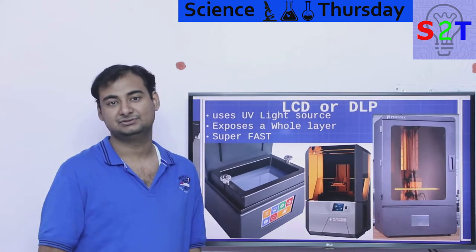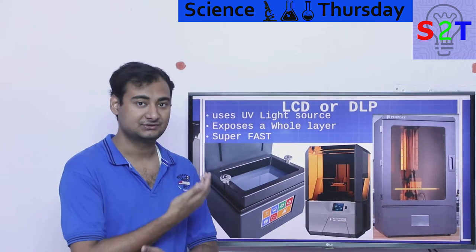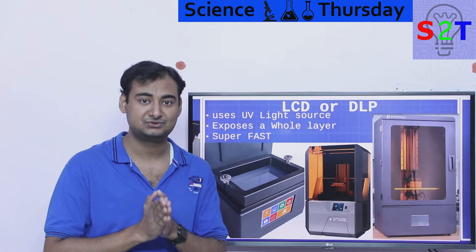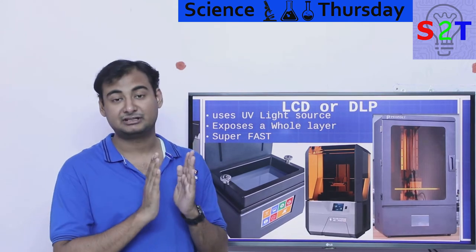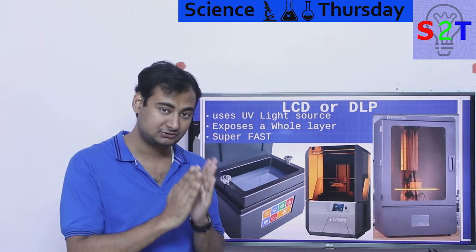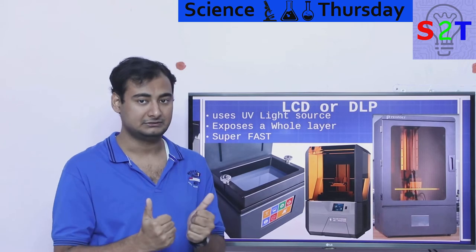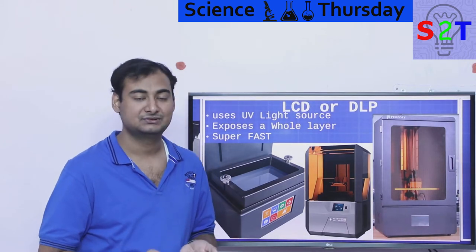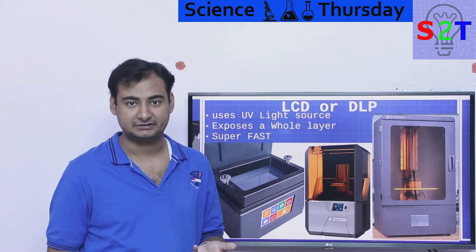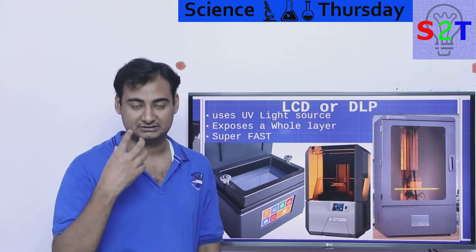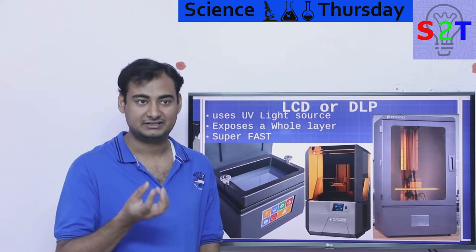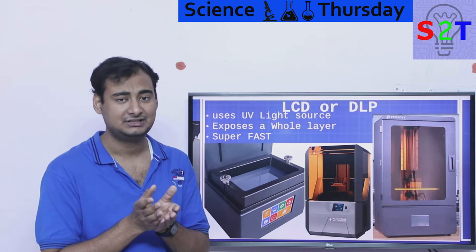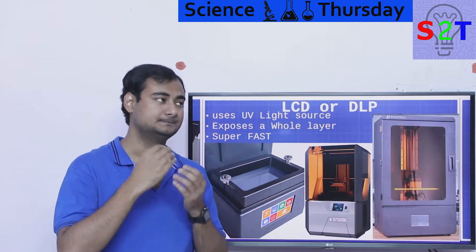Then somebody realized why use laser, why not use a simple light source? Because again laser has nothing special, you just want ultraviolet. Specifically if you can make it monochromatic and absolutely focused on one spectrum, awesome. Thankfully we have UV lights. So somebody came up with the idea: just take a projector. Instead of having X and Y, your DLP projector already has hundreds and thousands of tiny mirrors that are moving light on and off.